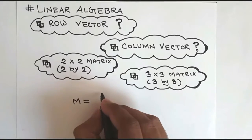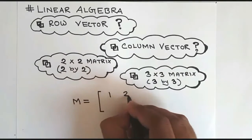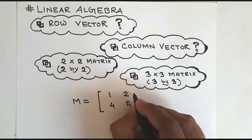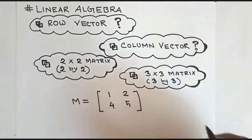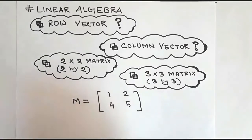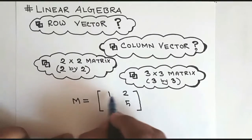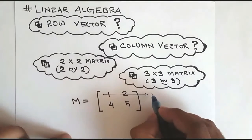First let me take a matrix M, and it's having its elements 1, 2, 4, and 5. So our matrix M consists of 1, 2, 4, and 5. Now the easiest way to remember is how many X axis or horizontal axis we have. Let me first take the X axis.